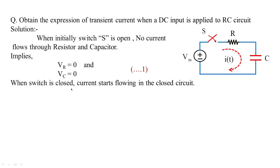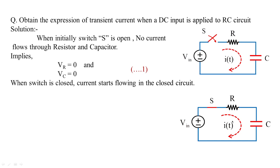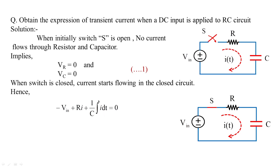Now when the switch is closed, current starts flowing in the circuit. When we are going to apply KVL to this single circuit, we are going to see that the input voltage as well as the drop across resistance and capacitance is equal to 0 — that is, the algebraic sum of the voltages in a loop circuit is equal to 0. So the voltage across resistance is Ri and the voltage across capacitance is 1/C times the integration of I dt. Now this we are treating as equation 2.